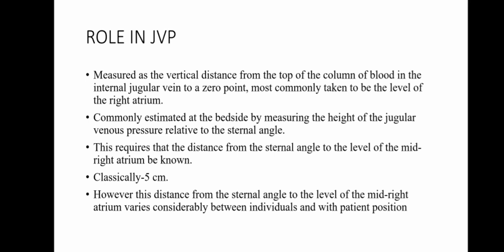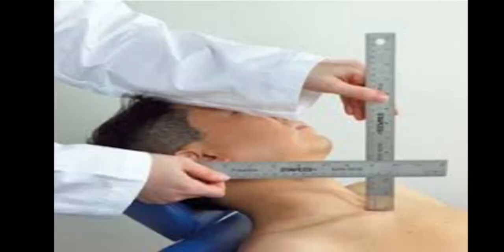This requires that the distance from the sternal angle of Louis to the level of the mid-right atrium be known. This value is often taken to be 5 centimeters, which is the length of the right atrium. This clinical photograph shows the measurement of the jugular venous pressure.